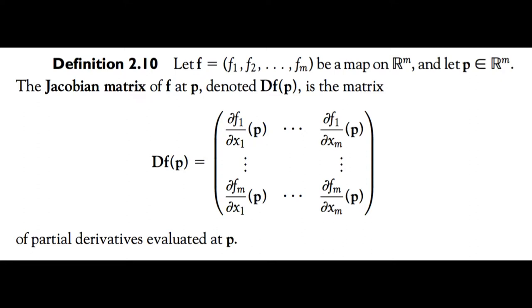To understand the bifurcations of two-dimensional planar systems, everything begins at the Jacobian matrix of our system — the linearization at the equilibria. Close to the equilibria, we get eigenvalues that tell us the direction of the flow. Positive eigenvalues give an expanding flow, negative eigenvalues a contracting flow, and a mixture produces a saddle node. Imaginary eigenvalues create rotating flows.